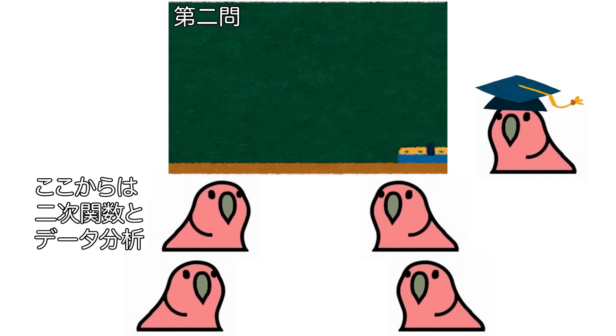Sore wa hontō ni 16-do nano? Shukushaku wa atteru no? E? Chigau shukushaku no sankakuhi wa, dō keisan suru no? Kimi ga ima teigi shita wake? Oshiete. Next, koka kara wa nijikansū to dēta bunseki.